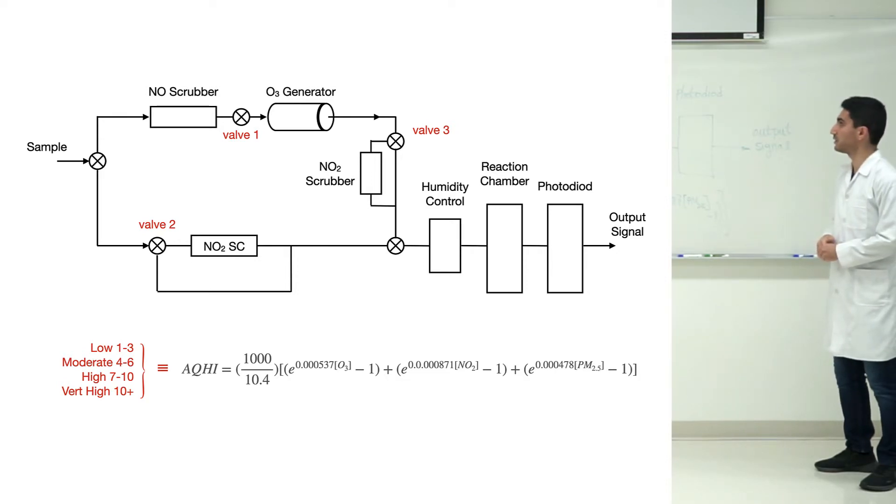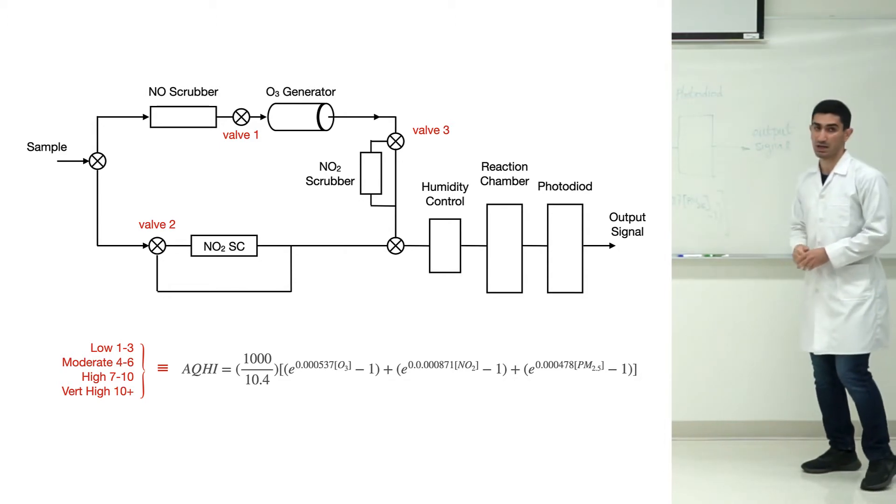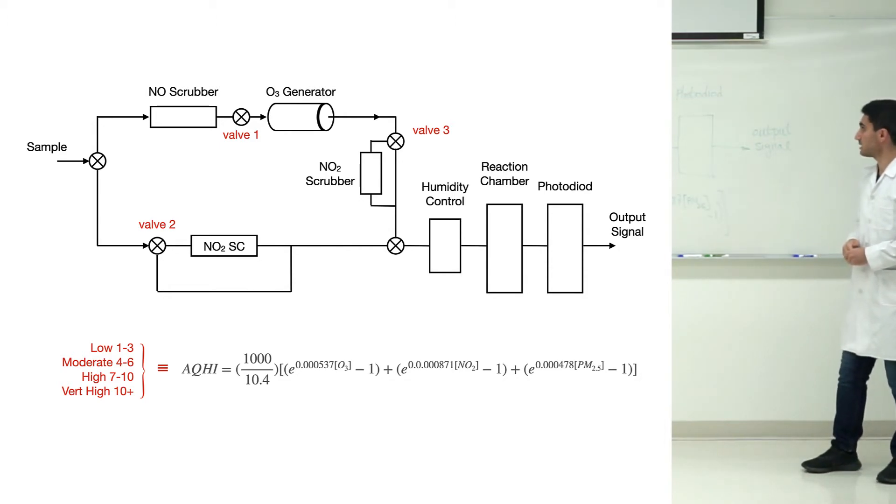Why do we have a reaction chamber? To turn all the nitrogen monoxide into nitrogen dioxide and measure total NO2 concentration, we need a reaction between ozone and nitrogen monoxide. The reaction chamber does this for us.